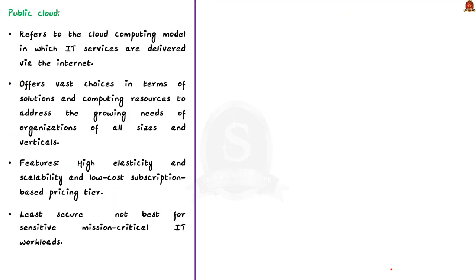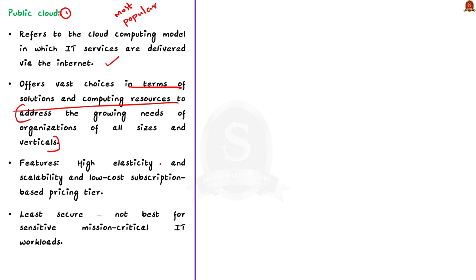Cloud computing can be categorized into three general types: public cloud, private cloud and hybrid cloud. The public cloud refers to the cloud computing model in which IT services are provided via the internet. This is the most popular model of cloud computing. The public cloud offers vast choices in terms of solutions and computing resources and addresses the growing needs of organizations of all sizes. Public cloud has high elasticity, high scalability and low cost. However, public cloud is the least secure, so it is not best for sensitive mission-critical IT workloads.